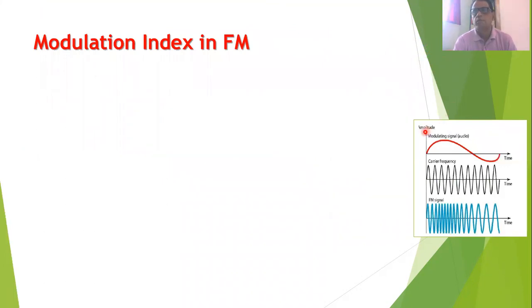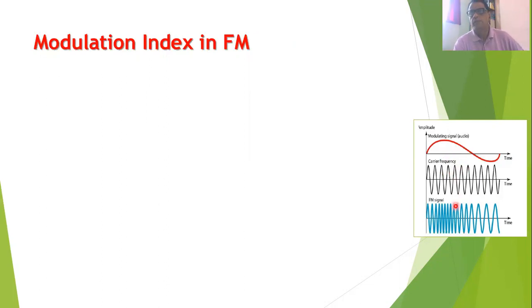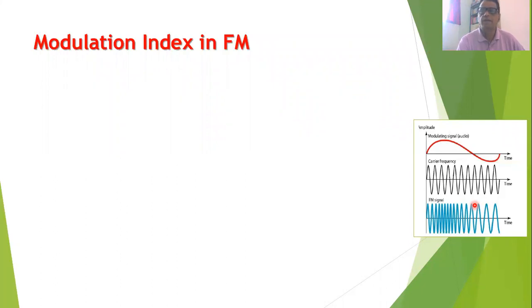We have already seen waveforms for frequency modulation. In FM, we apply a modulating signal — this is our audio signal or information signal — which is a low frequency signal, and we have a high frequency carrier signal. In FM, the frequency of the carrier signal is varied in accordance with the amplitude of the modulating signal. Sometimes the frequency is increased, sometimes decreased, and this increase or decrease is directly proportional to the amplitude of the modulating signal.